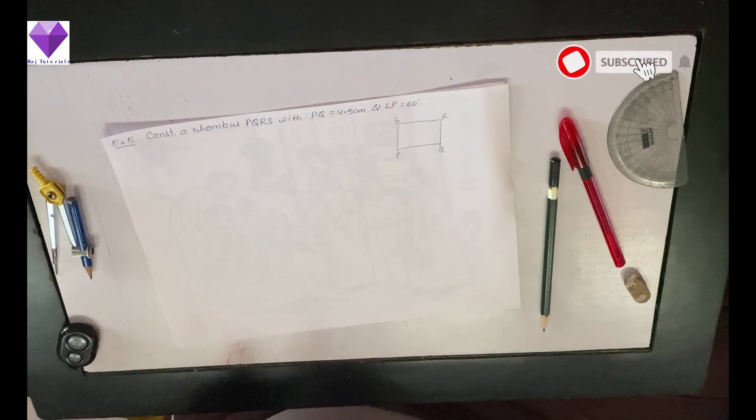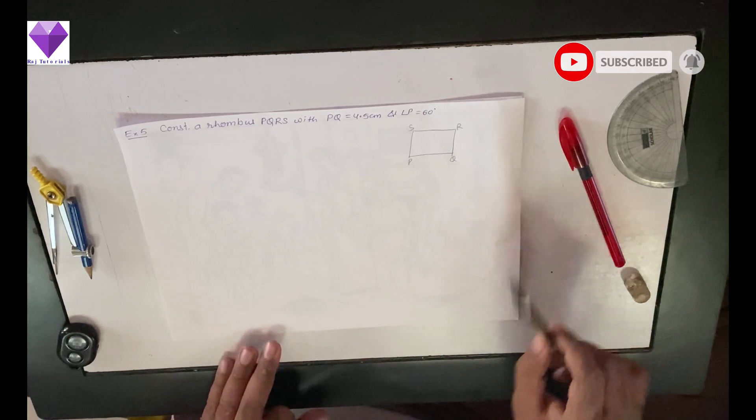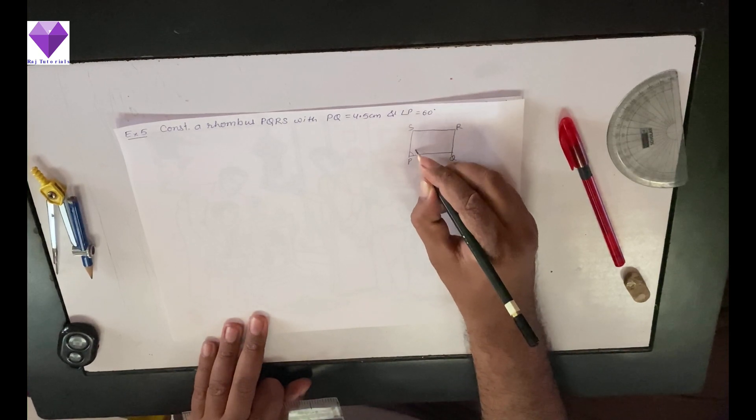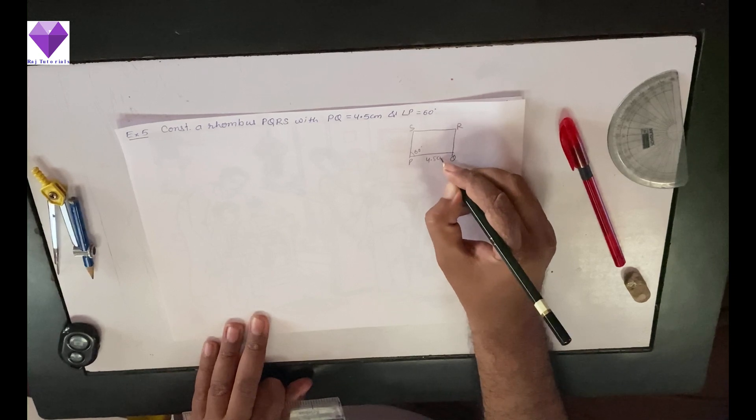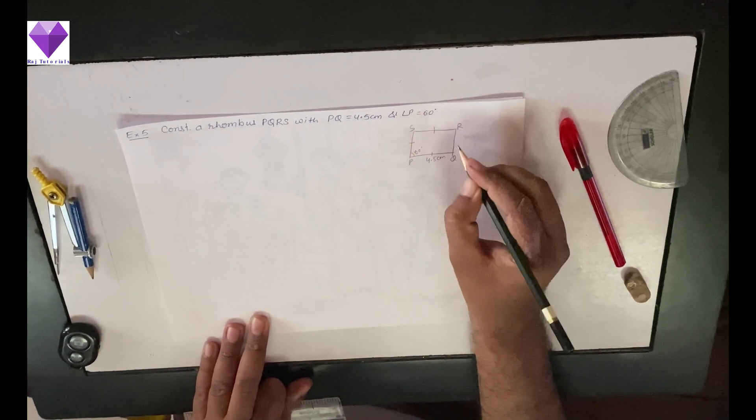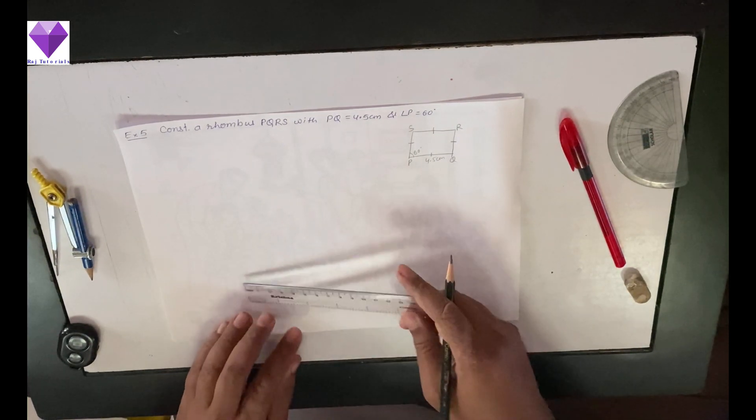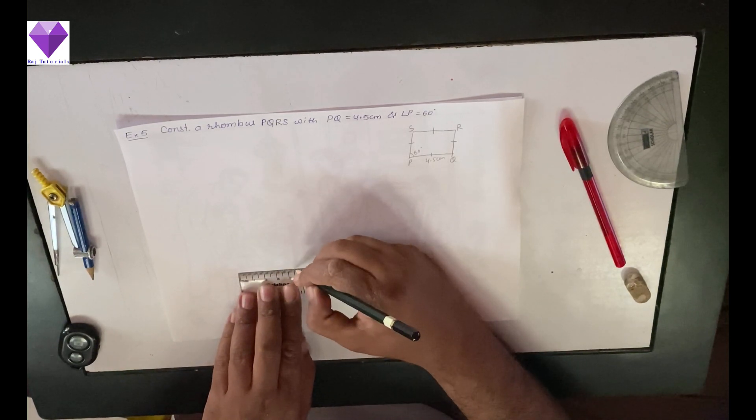Hello students, today we are going to construct a rhombus PQRS with PQ equal to 4.5 centimeters and angle P equal to 60 degrees. We know the property of rhombus that all four sides are equal, so first I will construct a 4.5 centimeter base naming it PQ.